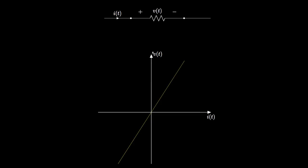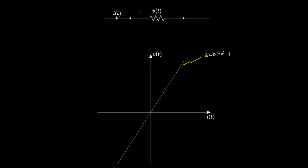For an ideal resistor, the voltage across is proportional to the current through the device, so the voltage-current relationship is a straight line. The numeric value for the slope of that line is called the resistance.